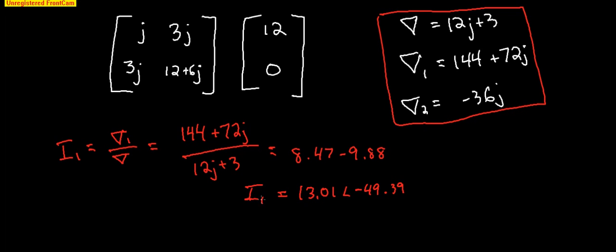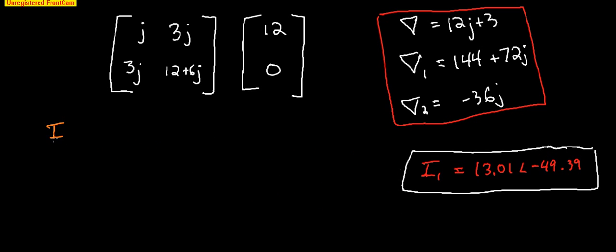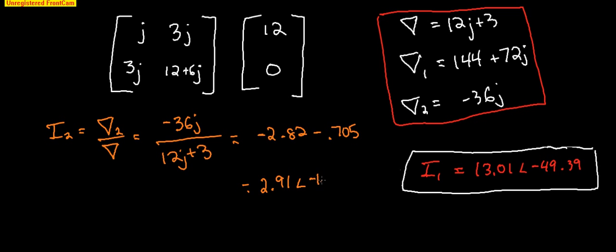That is i1. Solving for i2, I2 equals del 2 over del. And this is equal to negative 36j divided by 12j plus 3. Punch this into your calculator and you will get negative 2.82 minus 7.705 or 2.91 with an angle of negative 165.96 degrees.